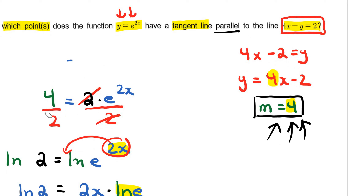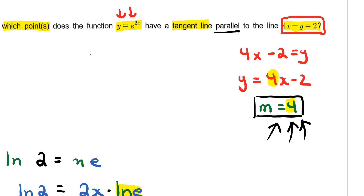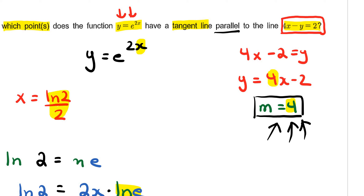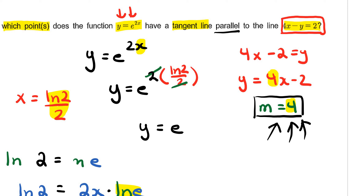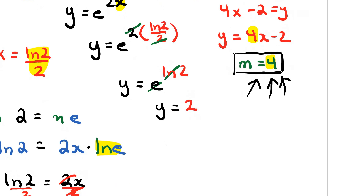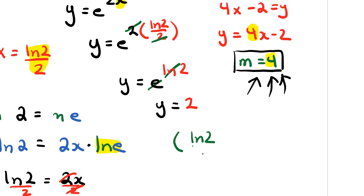Now we need to find the y value. Going back to the original function, y equals e to the power of 2x, and x equals ln(2) divided by 2. Substituting, y equals e to the power of 2 times ln(2) divided by 2. The 2s cancel, so y equals e to the power of ln(2), and e to the power of ln(2) is just 2. So our final answer is x equals ln(2) over 2 and y equals 2.